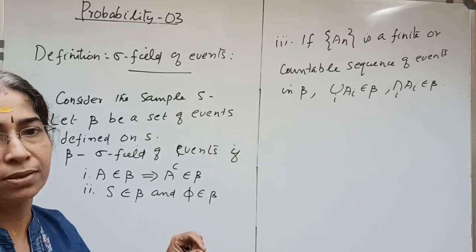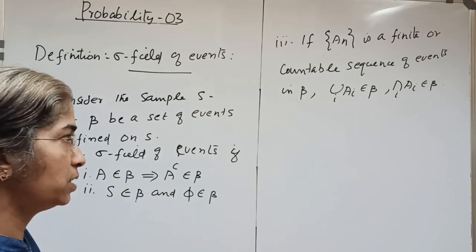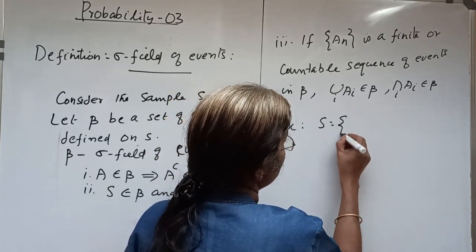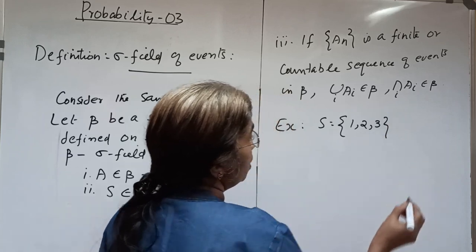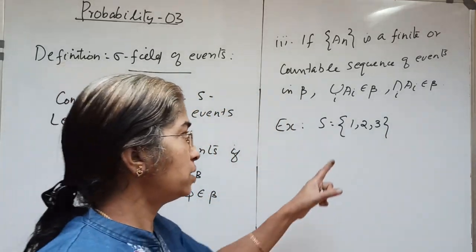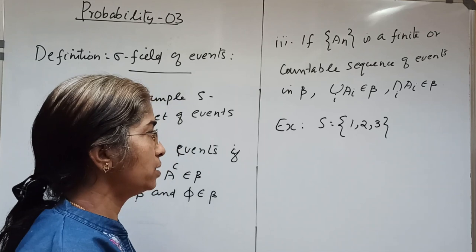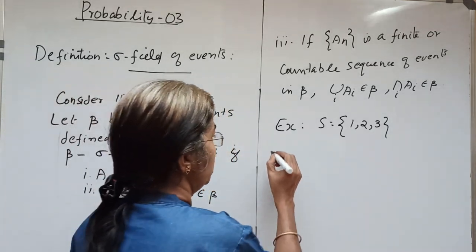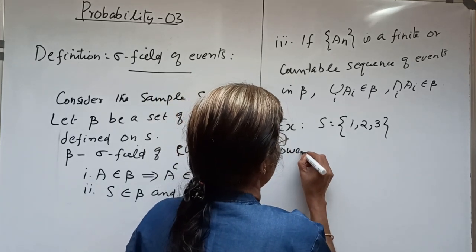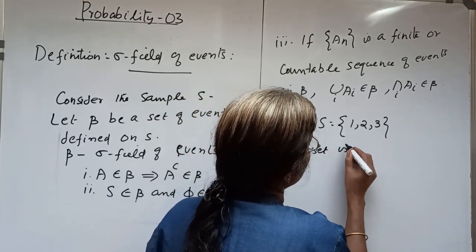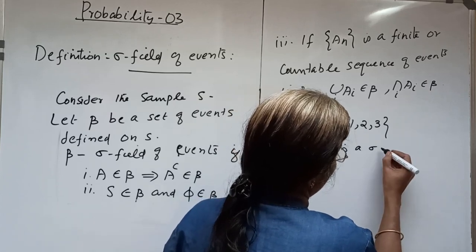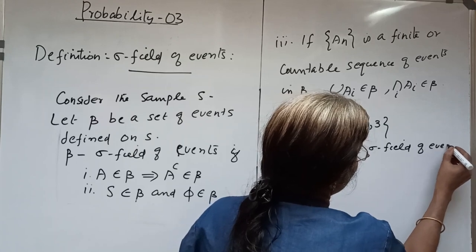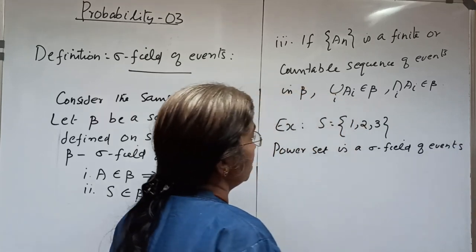For example, suppose S is the set {1, 2, 3}. We can write the power set — the set of all subsets of S. The power set is a sigma field of events. The power set, which contains 2³ = 8 elements, can be listed as the subsets of S.